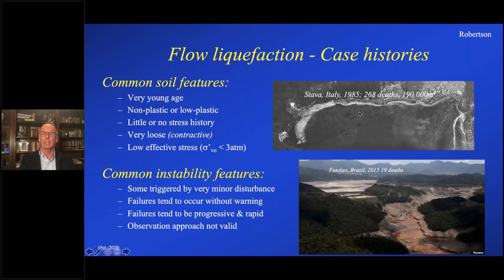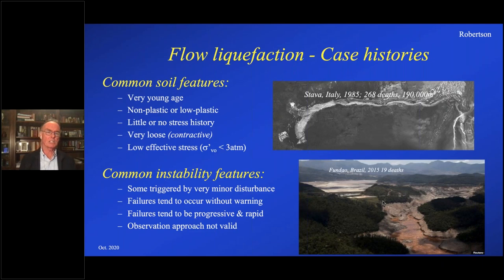Looking at case histories in general — here is an image of the Stava tailings dam failure in Italy and the Fundão image from Brazil. The common features of all these failures: the deposits are very young in geologic age. Tailings deposits almost by definition are very young compared to most natural deposits. They're mostly non-plastic or low-plastic materials. There's little or no stress history — they're young, uncemented, with very little stress history. They're very loose, so they're contractive at large strains. The effective stress on the initial failure mechanism and subsequent regressive failures are all low — generally less than two atmospheres.